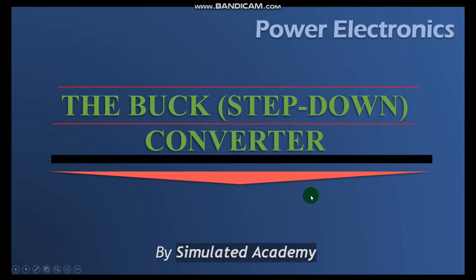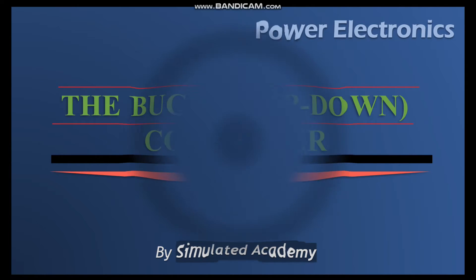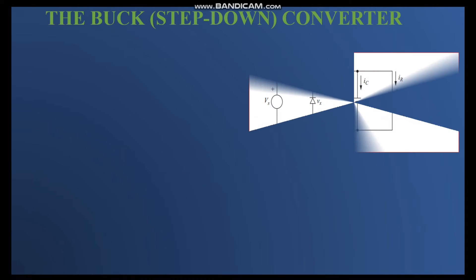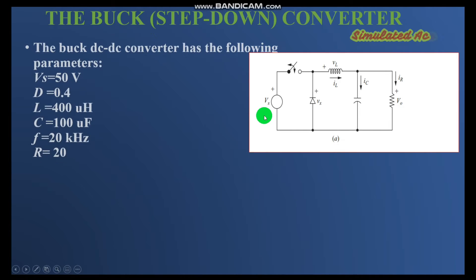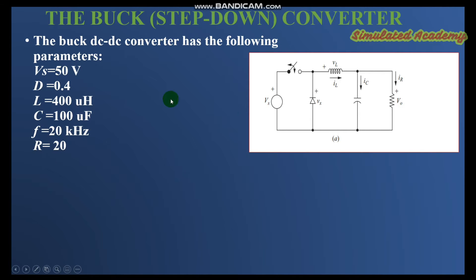Welcome guys, let's solve a problem. The problem is to practice the buck converter by an example. Consider I have this buck converter. The parameters of this buck converter are as following: the supply voltage is 50 volts, the duty cycle is 0.4.